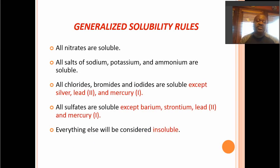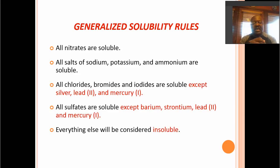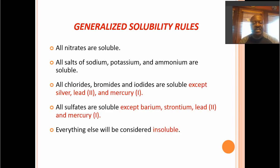Here are the solubility rules — it's important to remember some of these. All nitrates, all group one salts, and all ammonium salts (NH4+) are soluble. The halides (group seven) tend to be insoluble when hooked up with silver, lead, and mercury. Sulfates of barium, strontium, lead, and mercury are insoluble, and everything else we'll consider as soluble.